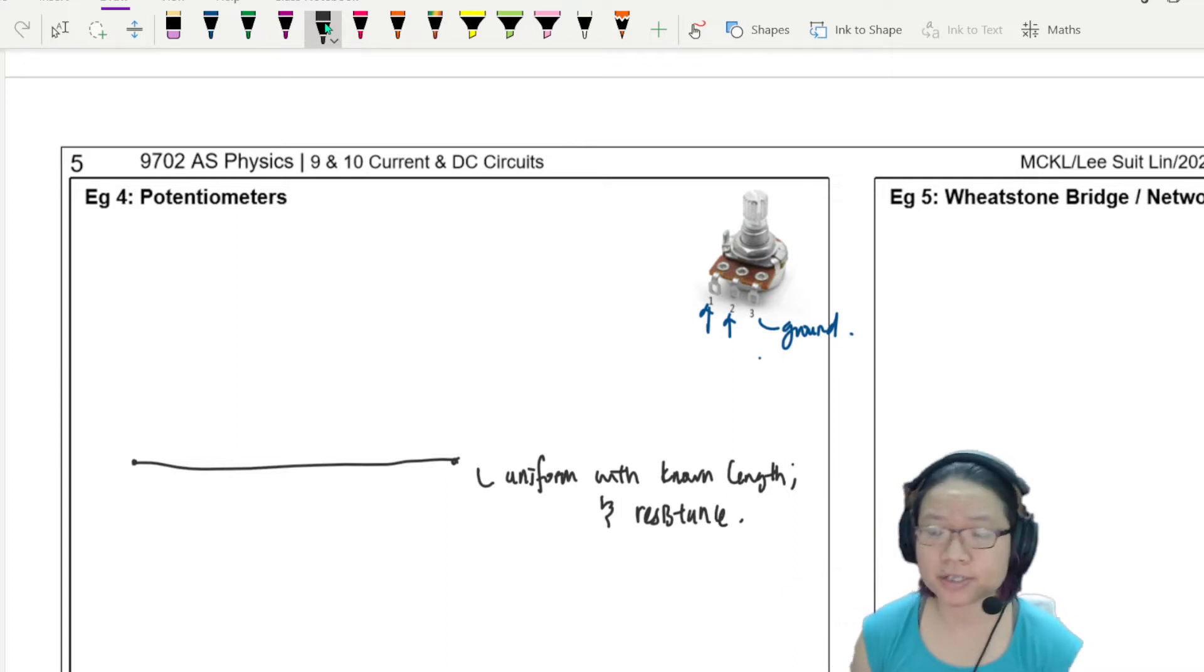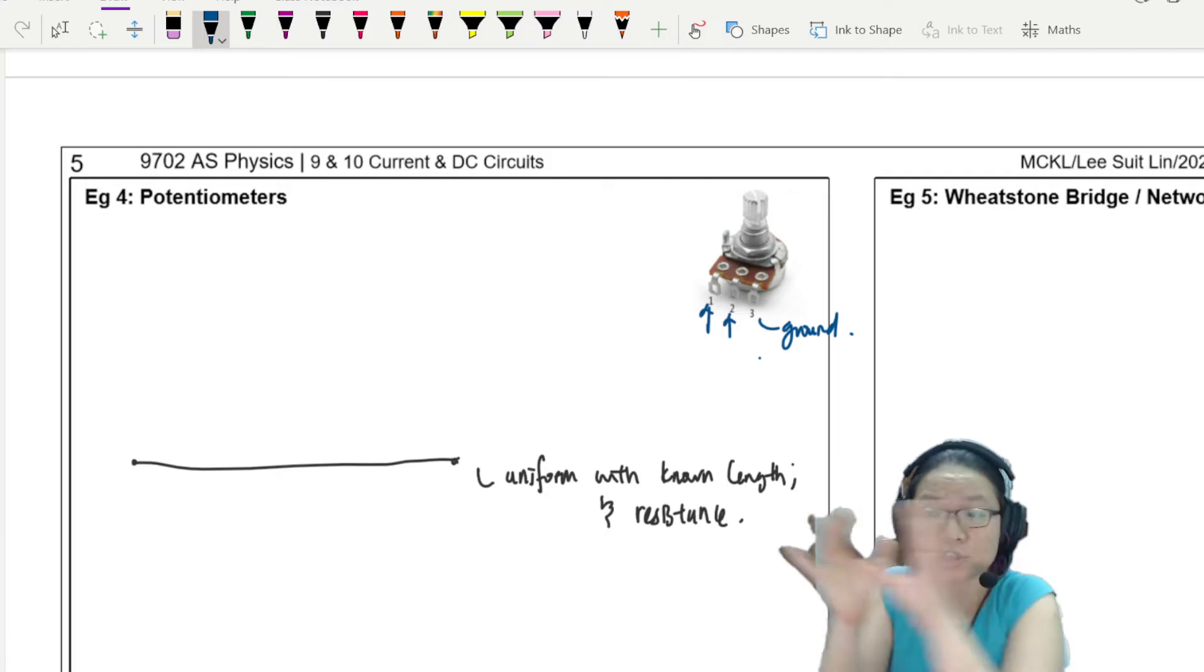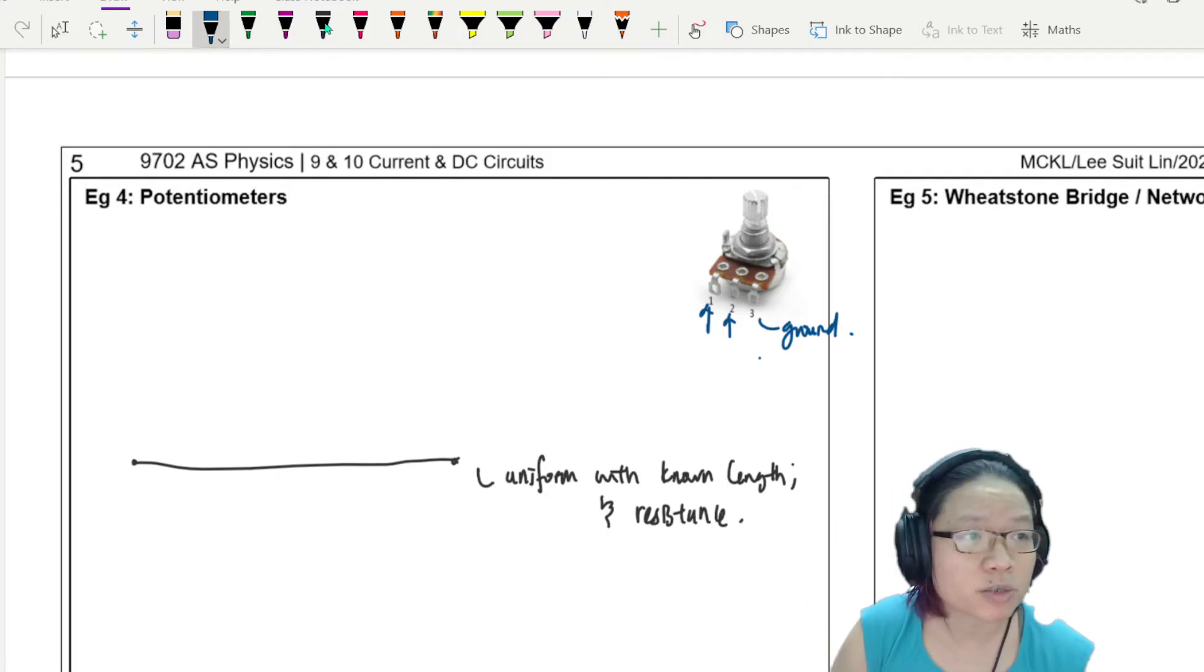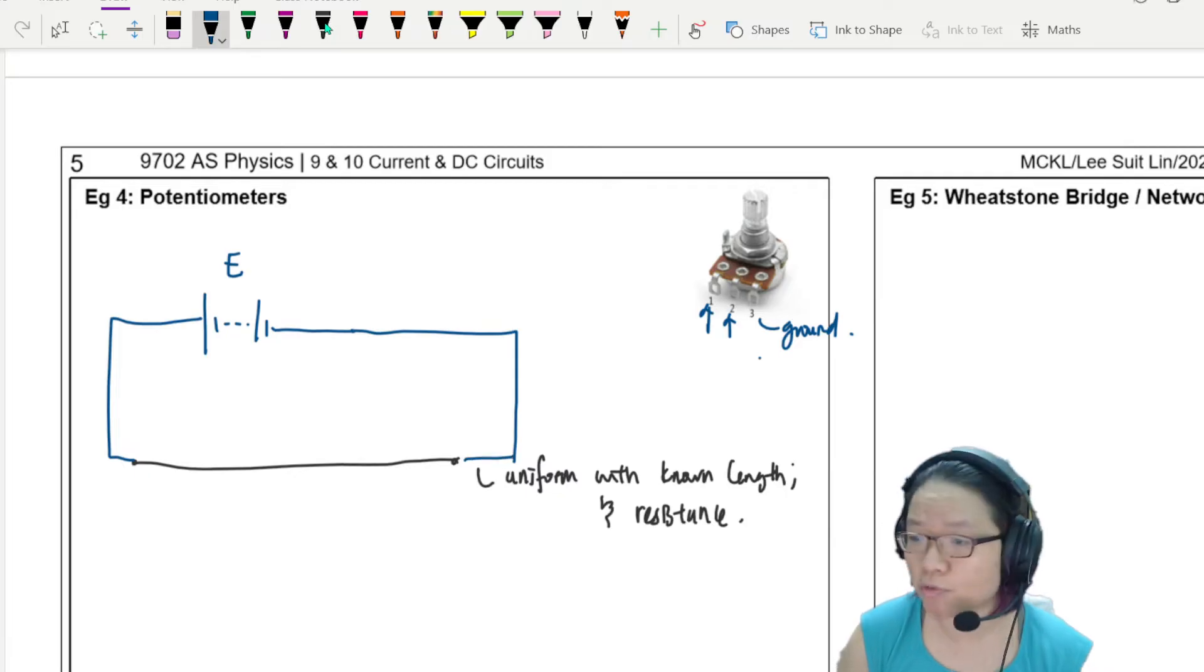So you know the length and hopefully you also know the resistance. Of course, if it's an exam question, they could ask you to find the value of r. But most of the time in experiment, we definitely know a lot about the wire because we're going to use the wire to measure something else. So to set up this wire, I am now going to connect the wire to a circuit. Let's say this circuit has a potential difference of 12V.